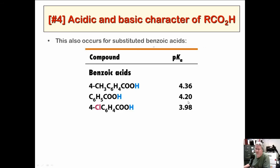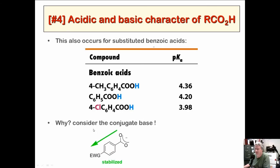If you have an electron-withdrawing group on benzoic acid, it's pulling the negative charge through the molecule — that's complementary and stabilizes the conjugate base. But if you have a donating group, you have negative charge going one way and a donating group pushing the other way — that's not complementary and is slightly destabilizing. That's an easy way to remember this for benzoic acids.